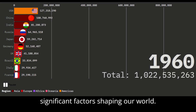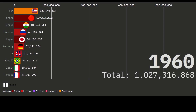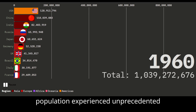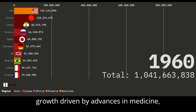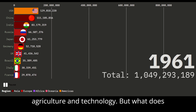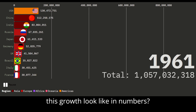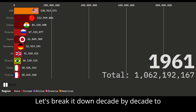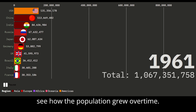Population growth is one of the most significant factors shaping our world. From 1960 to 2017, the global population experienced unprecedented growth, driven by advances in medicine, agriculture, and technology. But what does this growth look like in numbers? Let's break it down decade by decade to see how the population grew over time.